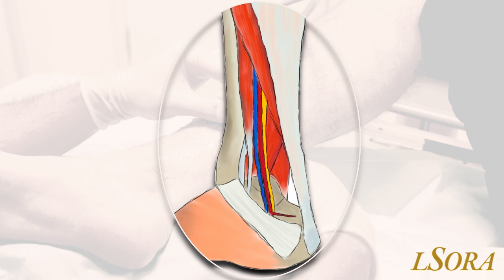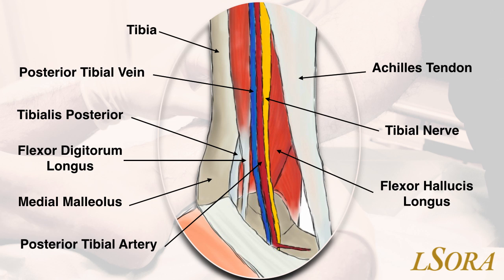Illustrated here is the anatomy of the tibial nerve. Starting from anterior and moving posteriorly, you have the medial malleolus, the tendon of tibialis posterior, flexor digitorum longus, the posterior tibial vein and the posterior tibial artery, the tibial nerve, flexor digitorum longus, and then soleus and the Achilles tendon.